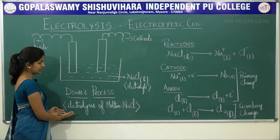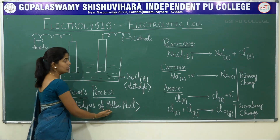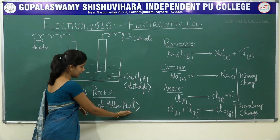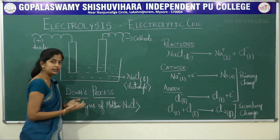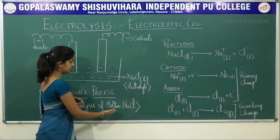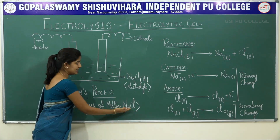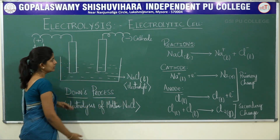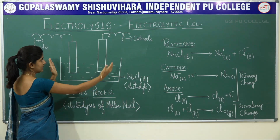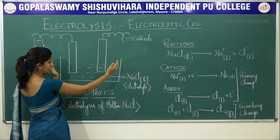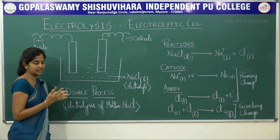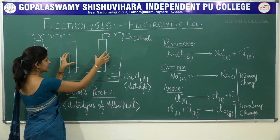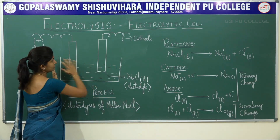The Down's Process is nothing but the electrolysis of molten NaCl. NaCl is a solid; its molten or liquid form is called molten NaCl, and its electrolysis is the Down's Process. This is an electrolytic cell — a setup of two electrodes dipped inside an electrolyte.